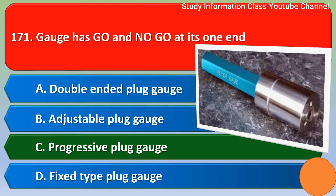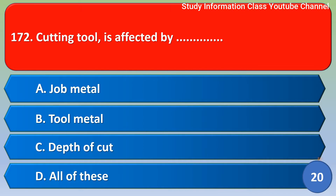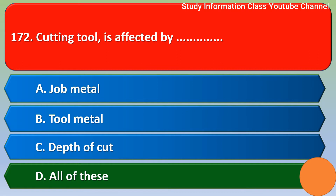Next question: cutting tool is affected by — option A: job metal, option B: tool metal, option C: depth of cut, option D: all of these. For this question, the correct answer is option D: all of these.